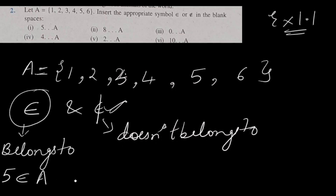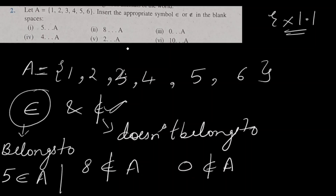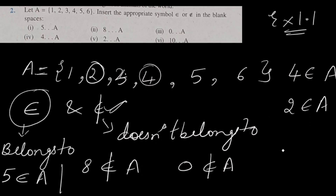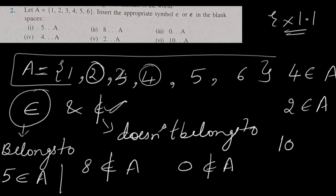Next is 8. Since 8 is not present in the set — we have only 1, 2, 3, 4, 5, 6 — so 8 ∉ A. Then 0 is also not present, so 0 ∉ A. Next, 4 is present, so 4 ∈ A. Then 2 is also present, so 2 ∈ A. Next, 10 is not in set A, so 10 ∉ A. With this, question number 2 is completed.